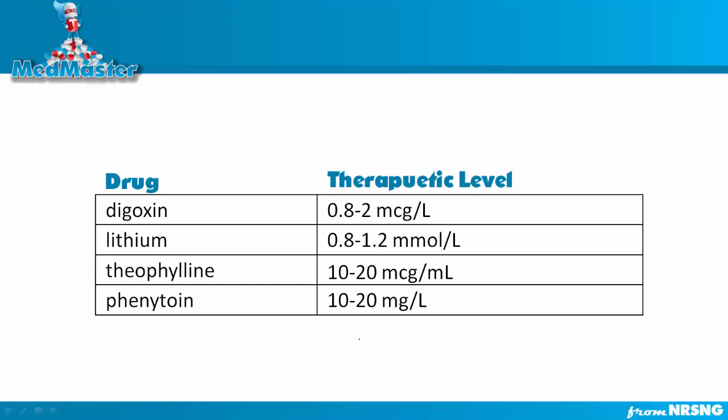The drugs you really need to know for the NCLEX and their therapeutic levels are digoxin, lithium, theophylline, and phenytoin. The most important are the first three. Digoxin's therapeutic level is 0.8 to 2 micrograms per liter. Lithium is 0.8 to 1.2 millimoles per liter. Theophylline is 10 to 20 micrograms per milliliter. And phenytoin is 10 to 20 milligrams per liter.